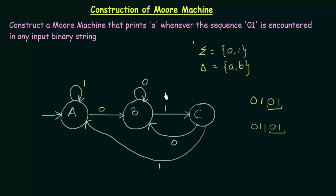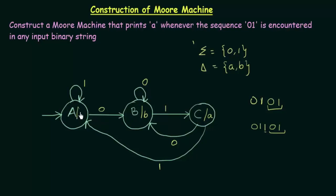Now we need to make this DFA a Moore machine. In a Moore machine, the output is associated with the states, not the inputs as it was for Mealy machine. Whenever we reach state C, that means we have encountered the sequence 01, and we should print 'A'. So in state C, the output is A. In the other states, I will print B — state A prints B and state B also prints B.